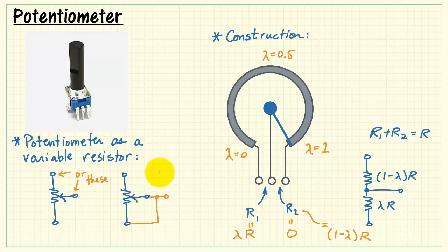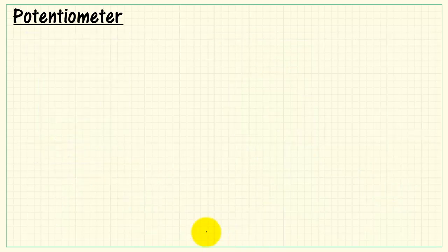Another technique that's often employed is to simply connect the wiper terminal to either end, that is shorting the unused terminal, and then you treat the two remaining terminals as the variable resistance.